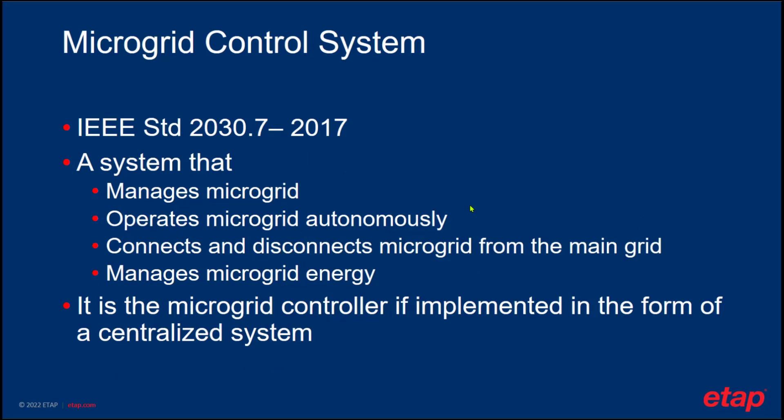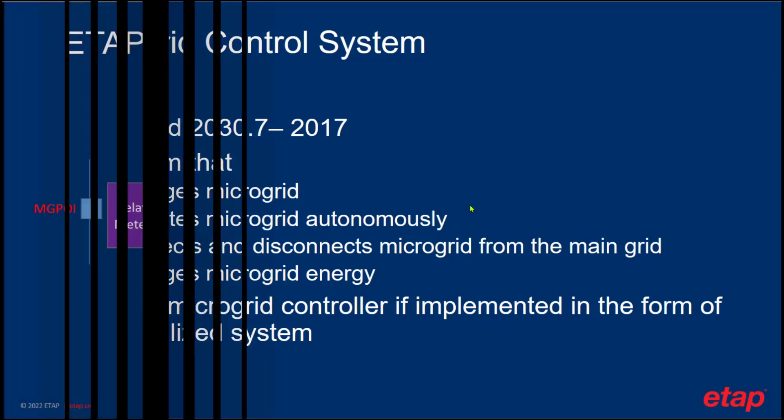As per IEEE standard 2030.7, released in 2017, a microgrid control system is a system that manages the microgrid, operates it autonomously, and connects and disconnects the microgrid from the main grid — providing transitions between different modes of operation. It also manages microgrid energy. When the microgrid control system is implemented as a centralized system, which is typical these days, we are dealing with a device called a microgrid controller.